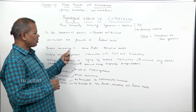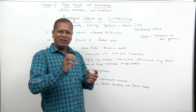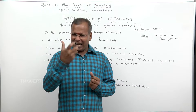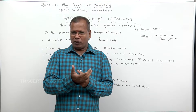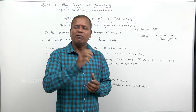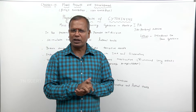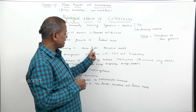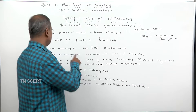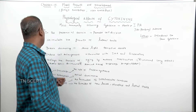Cytokinin breaks dormancy in some light-sensitive seeds. It acts as a substitute for light, helping seeds to germinate even without direct light exposure.